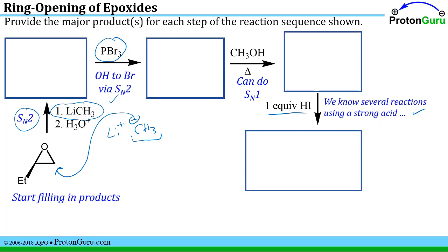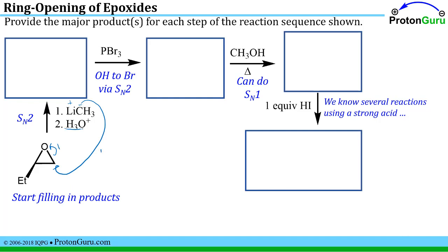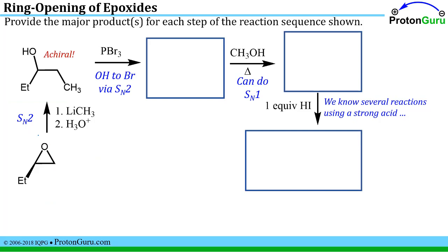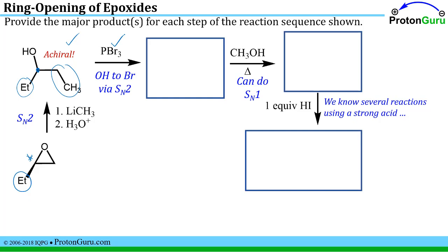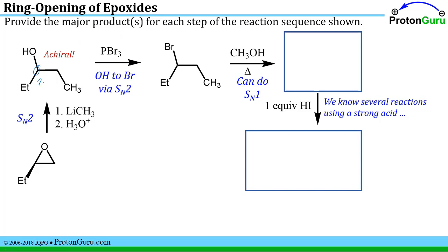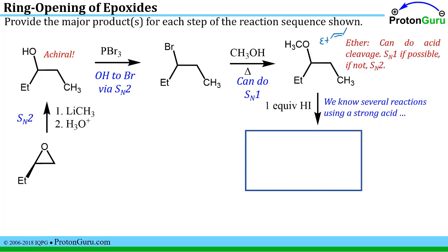Let's fill in the products. Step one opens the epoxide on the less substituted side; step two puts the proton on the oxygen, completing that product. One tricky aspect of this substrate is that what looks like a chiral center actually has two ethyl groups — one drawn out differently — making it an achiral compound. Step two with PBr3 converts the OH to Br by SN2 on the secondary site — no concern about Walden inversion since it's achiral. With methanol as a poor nucleophile and weak base, we get SN1 product plus some E1 side product; the major E1 product is the trans isomer.